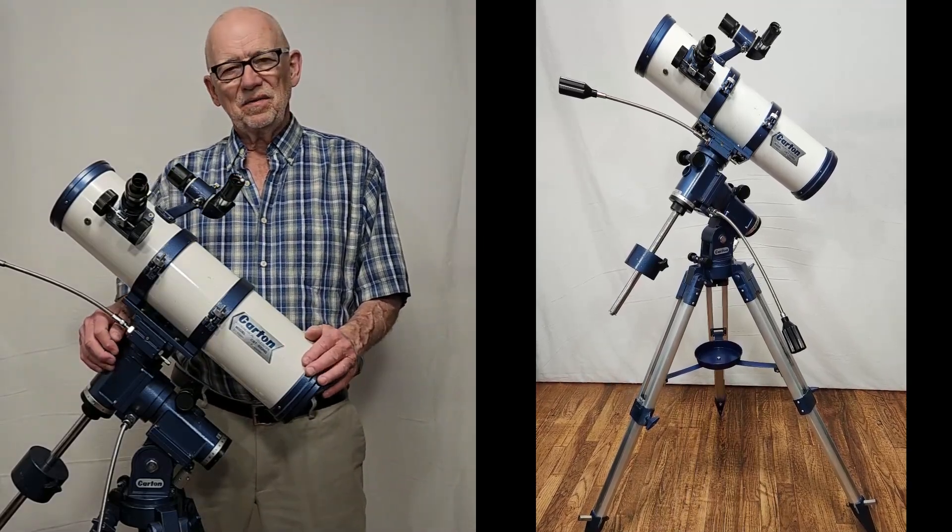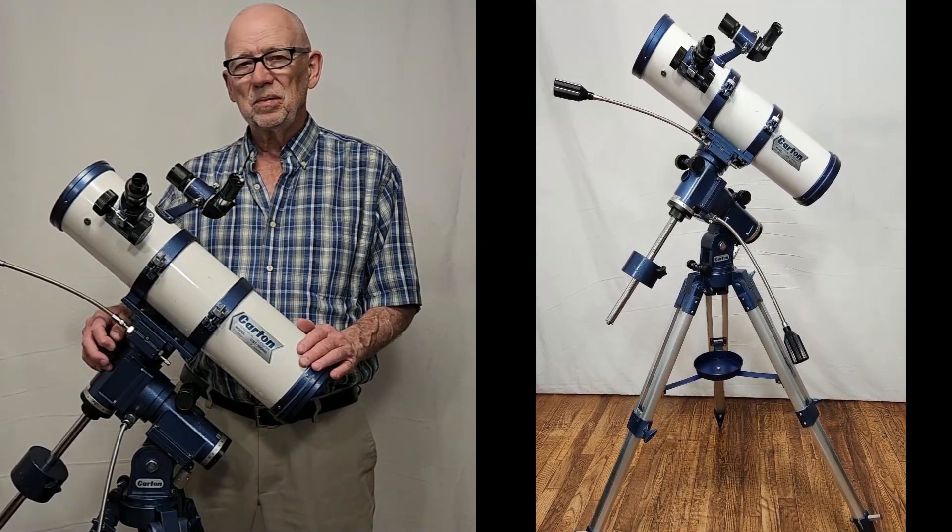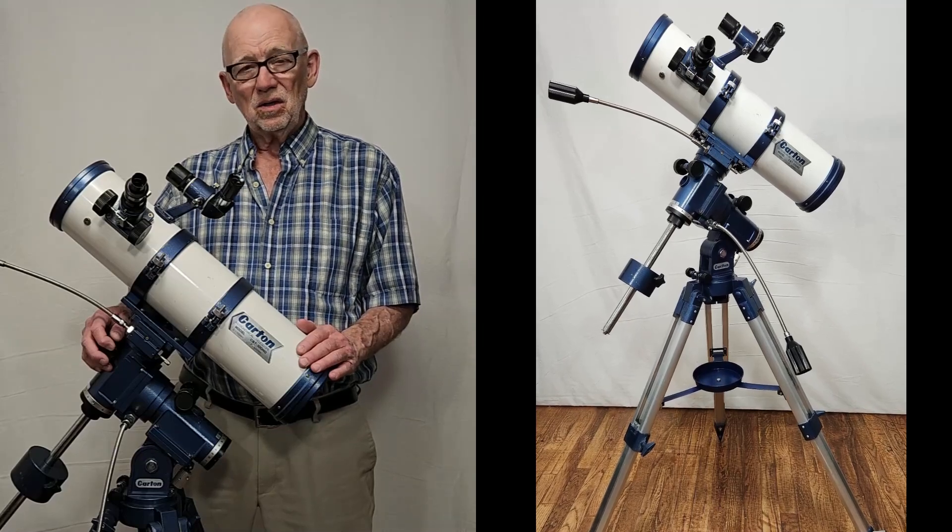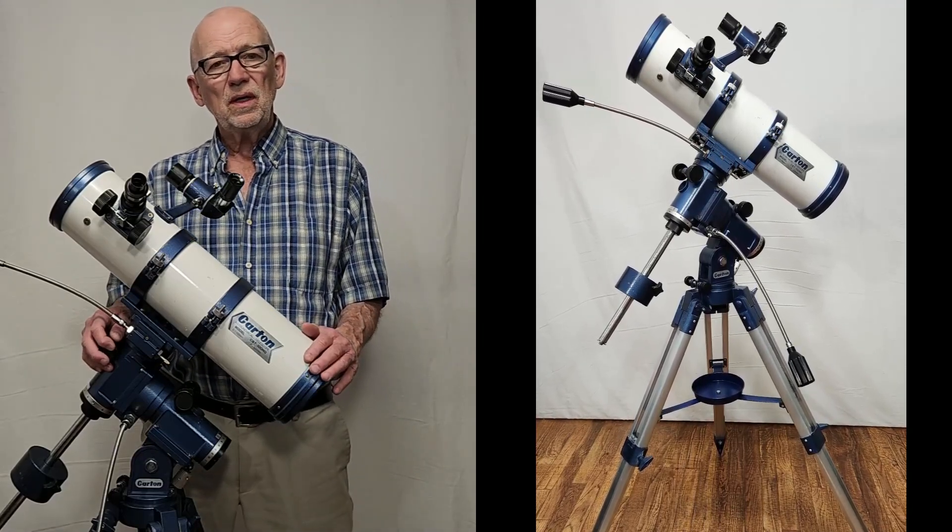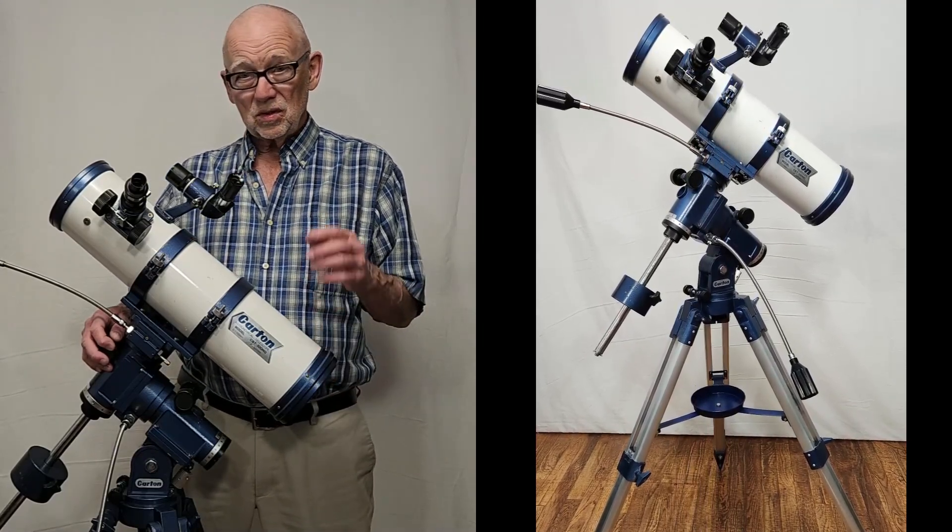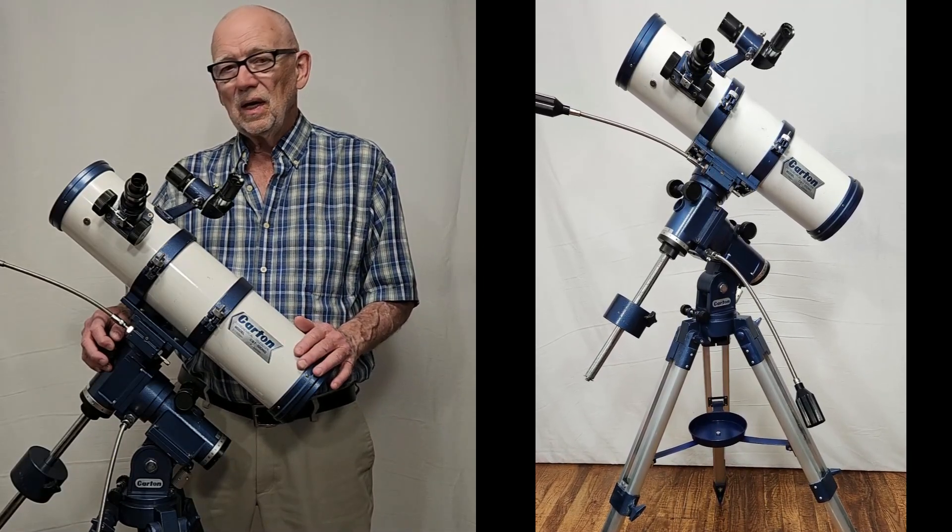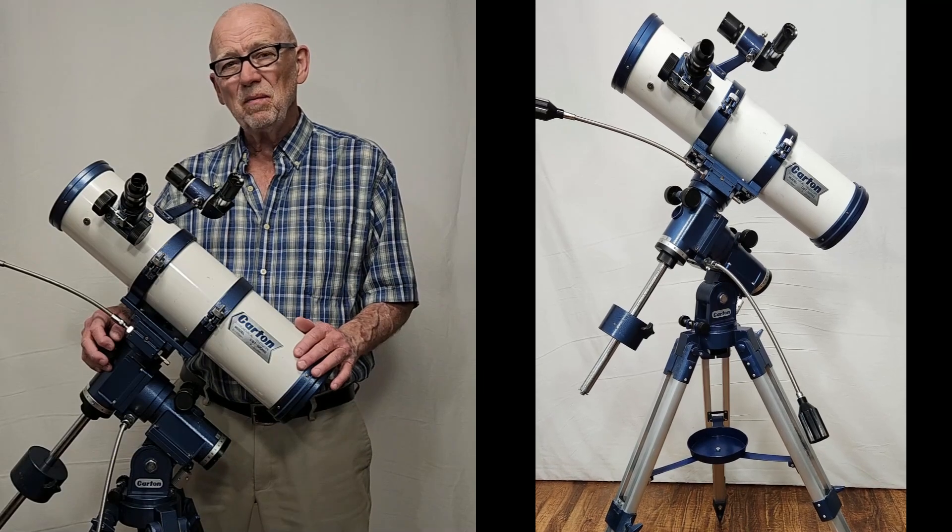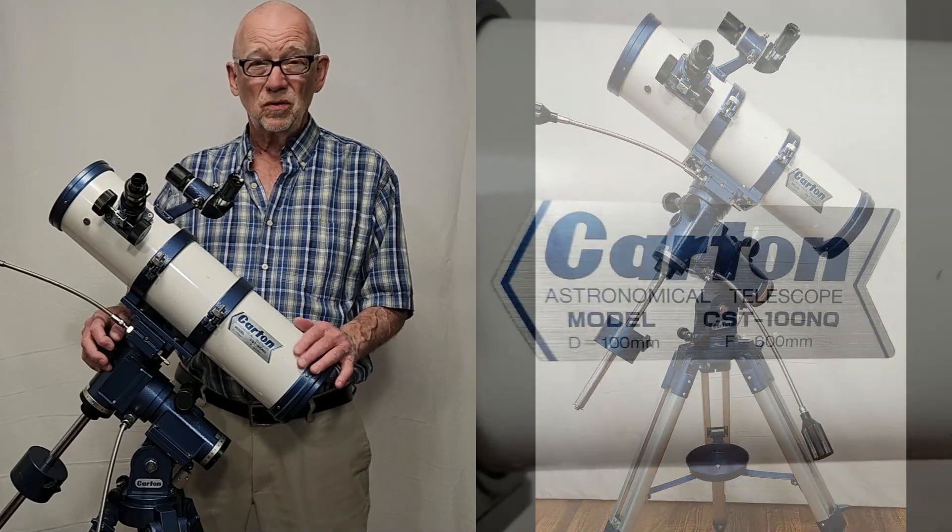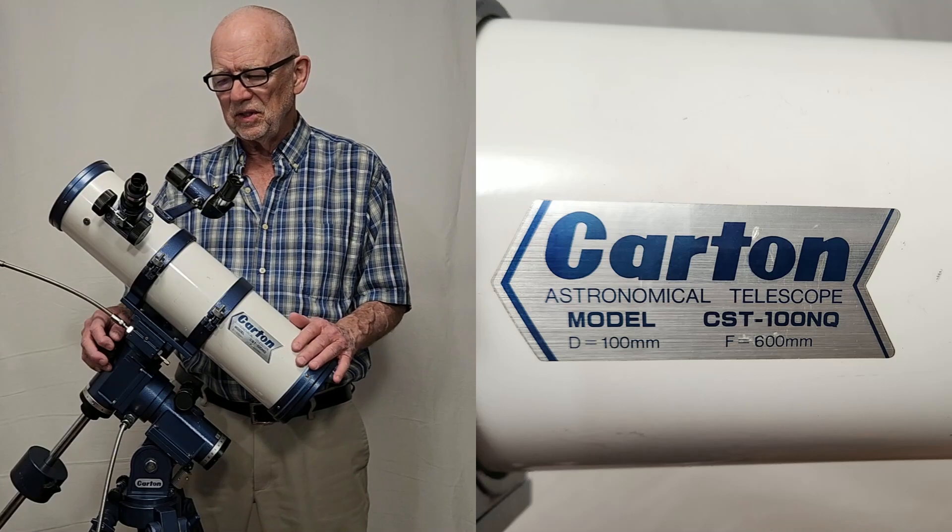Hi, my name is Dave. Today we're going to look at the completely captivating Carton CST-100NQ. Now this is a 100 millimeter telescope, that is a 4-inch aperture. It's on a CST mount which is otherwise called a supernova mount from Carton. About 1985 is the vintage.